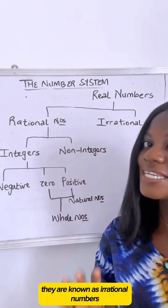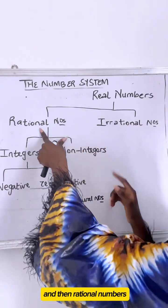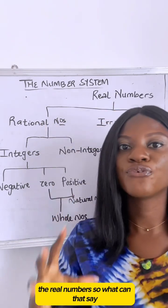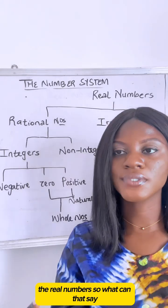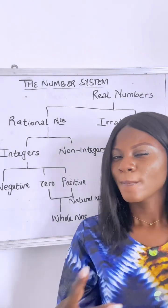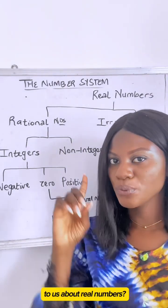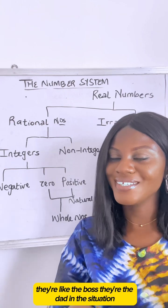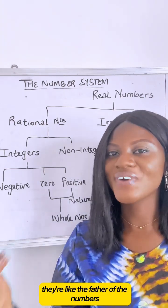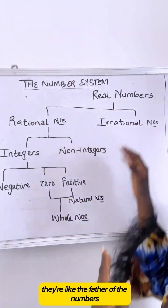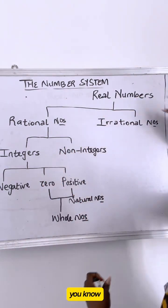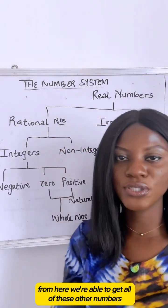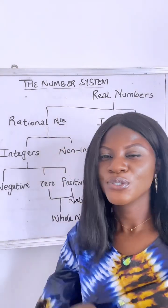If they are not rational numbers, they are known as irrational numbers. Rational numbers and irrational numbers together form what we call the real numbers. Real numbers are like the boss — they are the father of all numbers. From here we are able to get all of these other numbers.